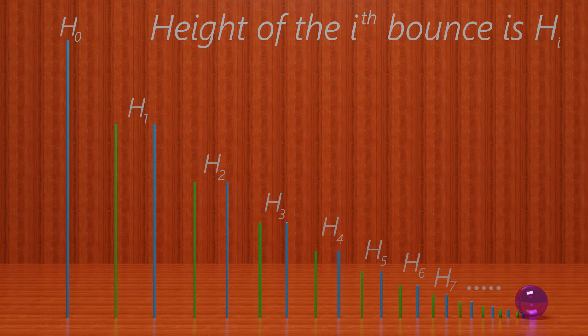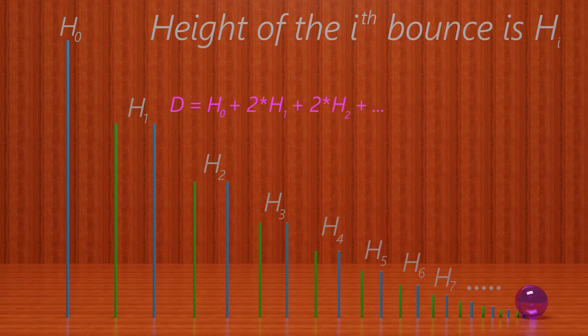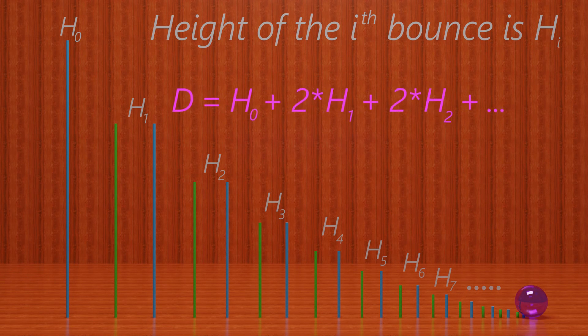Notice after the initial drop, each bounce has the ball going up and then falling back to the ground. Each bounce contributes 2 times its height, up and down. We can now write the distance the ball travels as H0 plus 2H1 plus 2H2 plus dot dot dot.